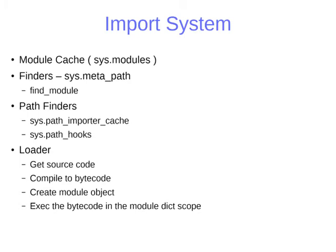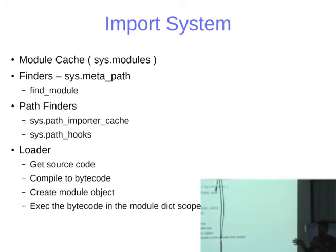To summarize the overall flow: check the module cache — if the module is available, return it. If not, ask the meta path finders to find a loader; if each finder can't find one, go to the path finders. Once a loader is found, create a module object using the loader.